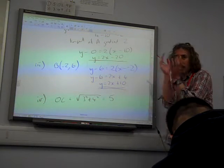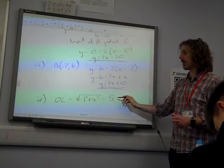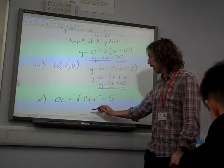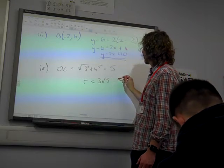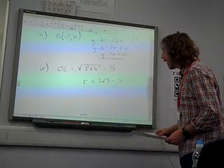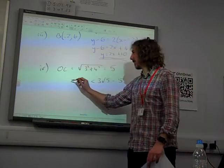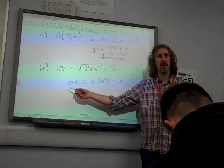In order for that little circle to fit, then the radius must be less than what's left of that bit. So, the radius has to be less than 3 root 5 take away the 5 that we've taken out. And, actually, it is kind of obvious, but radius has to be bigger than 0, but I'm not really sure. You could get away with not putting that bit in there.